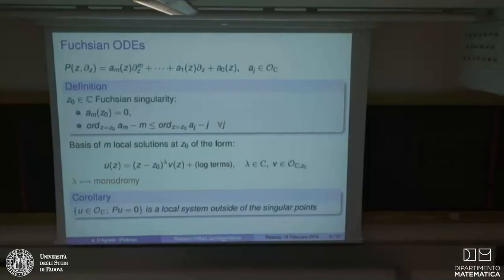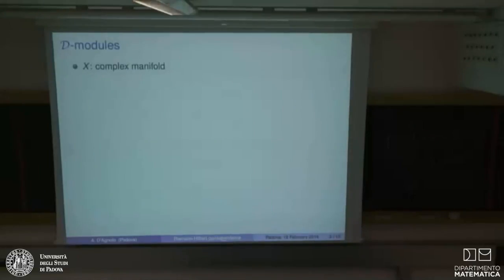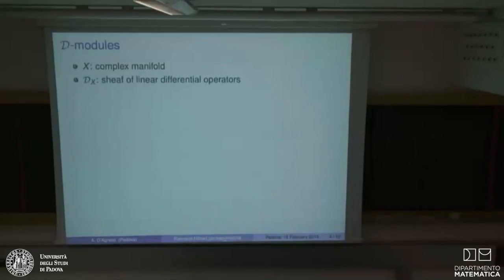Let me generalize this setting. I'm going to several complex variables and want to keep track of this kind of problem. The best way of formulating the Riemann-Hilbert correspondence, generalizing it to several variables, is by using the theory of D-modules. Take a complex manifold X, and denote by D_X the sheaf of rings of linear differential operators.